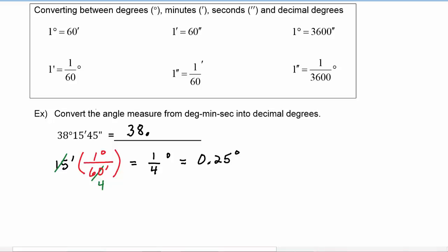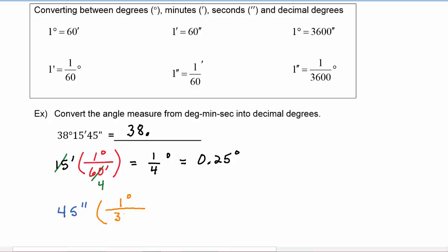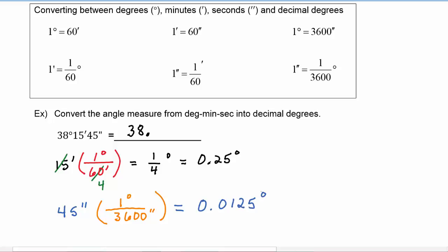Now let's look at the 45 seconds. We need to go from seconds to degrees, and we know that one degree is 3600 seconds, so that's the conversion factor we'll use. The seconds cancel, and doing the division, 45 divided by 3600 is equal to 0.0125 degrees. So 45 seconds of angle is equivalent to 0.0125 degrees.